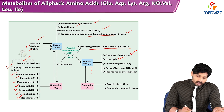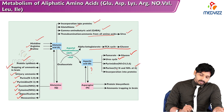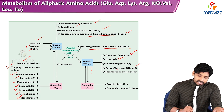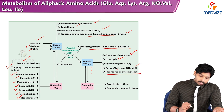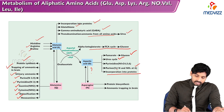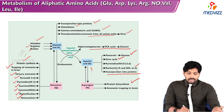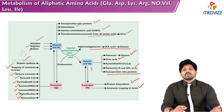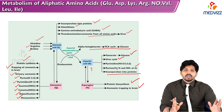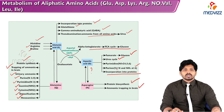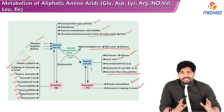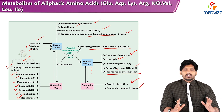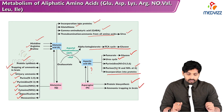In purines, aspartic acid donates the first nitrogen and the amino group at the sixth carbon. Aspartic acid is incorporated into proteins, and along with glutamine, is involved in trapping ammonia in the brain. That is the overall picture of the acidic amino acids and their widely distributed functions. Thanks for watching.